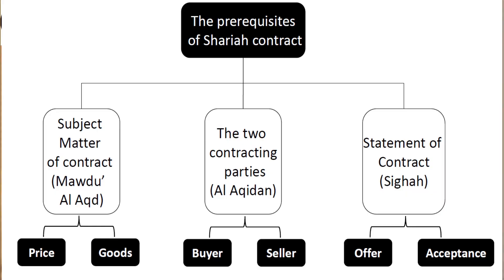The second pillar is the subject matter of the contract, or maudu al-aqid. In the case of sales, this is the goods and the price. The third pillar is the sigha — the expression or statement of the contract — which is the issuance of the offer and acceptance.